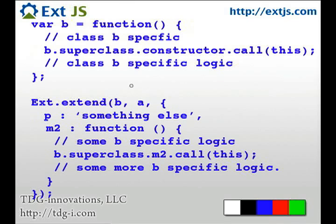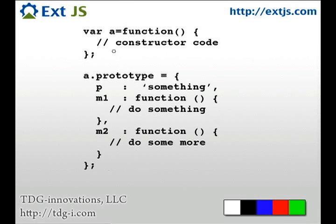So, this is a small, very lightweight representation on how you can take a simple class. Again, we'll go to Class A. And you can add more code to the constructor and to methods, and overwrite properties if you'd like to do that.